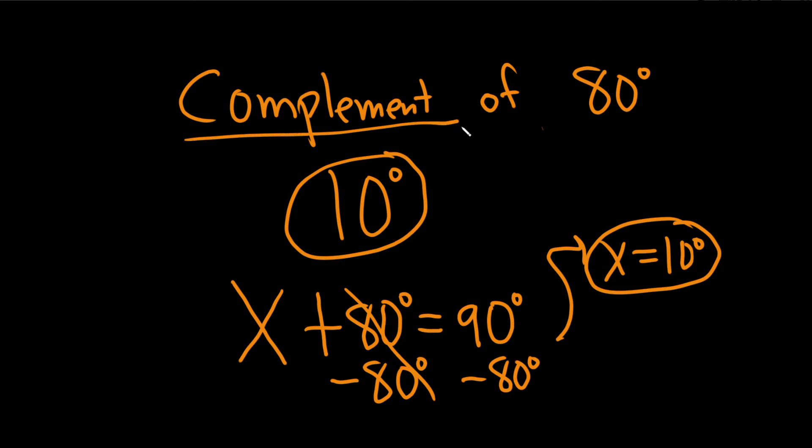Remember, complementary angles add to 90. So when you see a question like this, all you have to do is think, what angle do you add to this to get 90? The answer is 10.